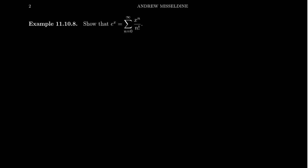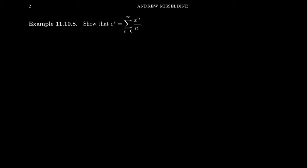Welcome back everyone. In this video we're going to show that e to the x is equal to its Maclaurin series — the sum from n equals 0 to infinity of x to the n over n factorial. In a previous video we already determined that this is the Maclaurin series for e to the x, the Taylor series centered at 0. What we plan to do now is actually prove that e to the x is equal to this Maclaurin series. Finding the Maclaurin series is one question, but showing that the function actually equals the series is a separate thing.